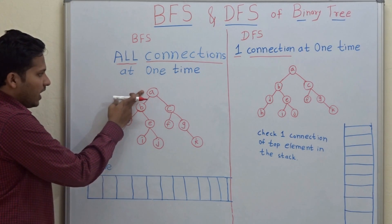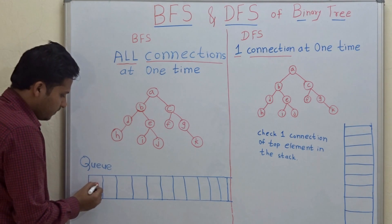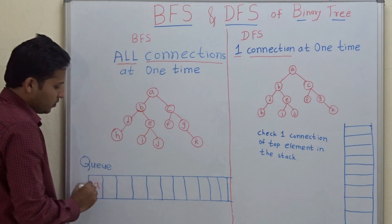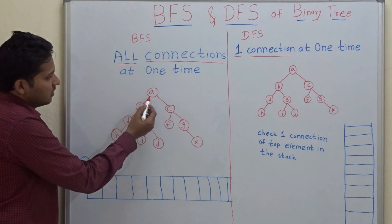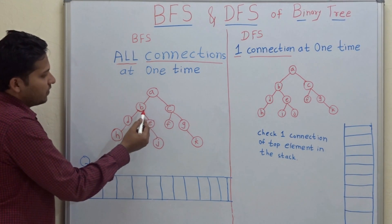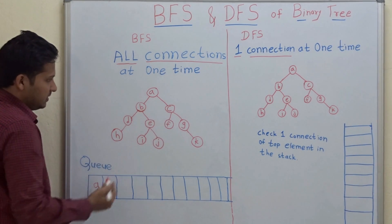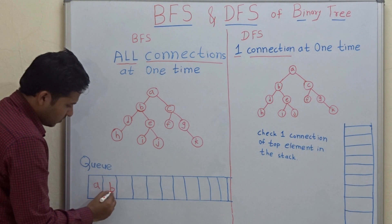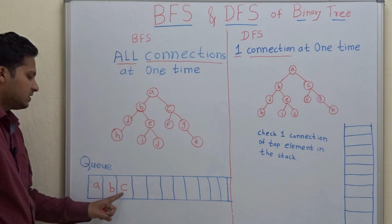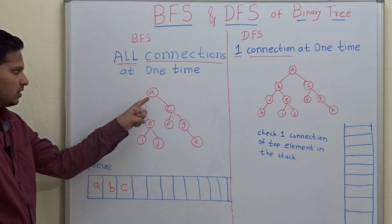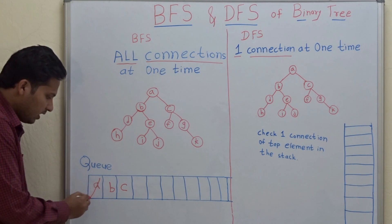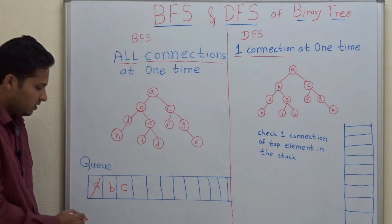We use a queue for BFS. So the root A — I will put root A in the queue. Then we go for all the connections of A, which are the left child and right child of A — that is B and C. When you put B and C, that is all connections of A, into the queue, you have to dequeue A and go ahead in the queue.